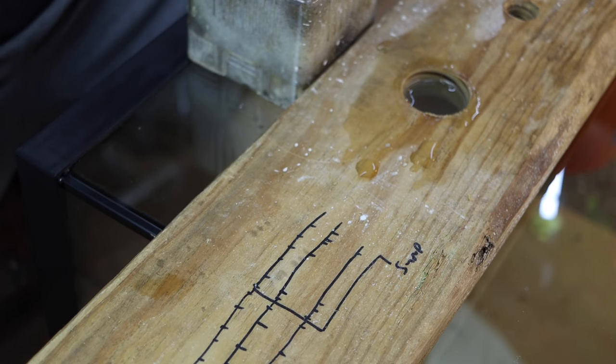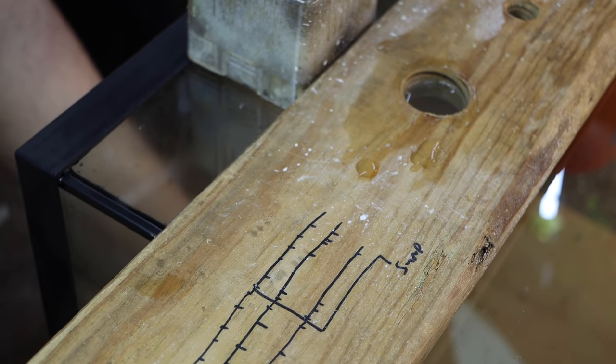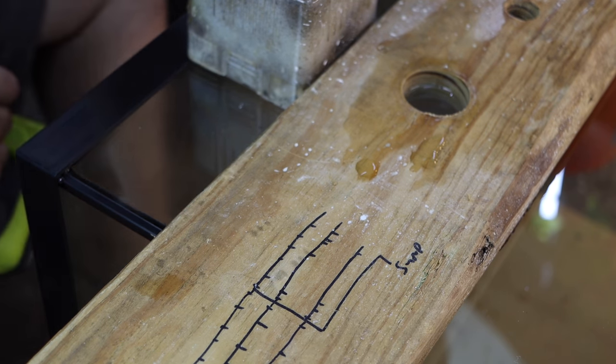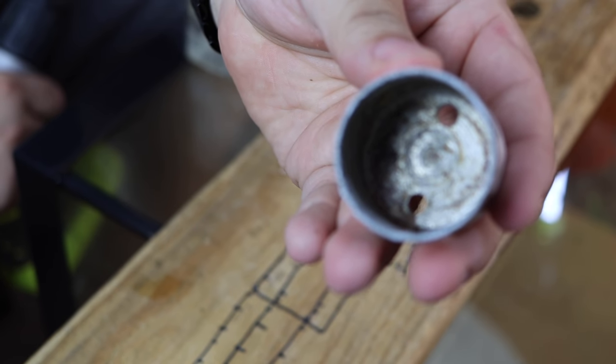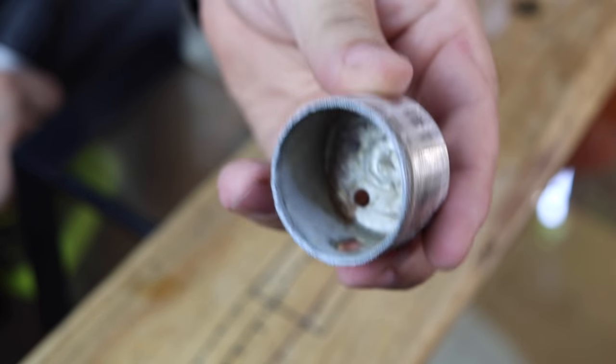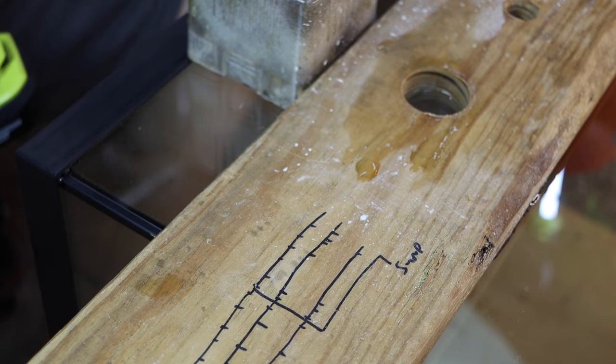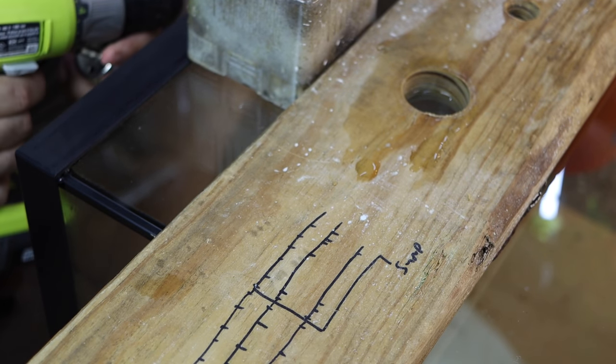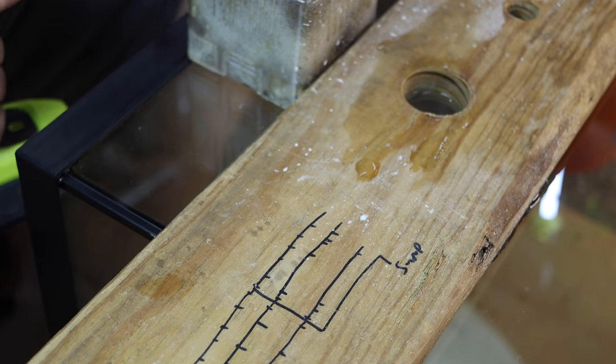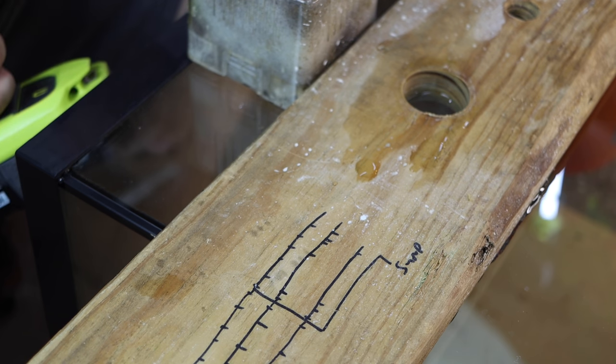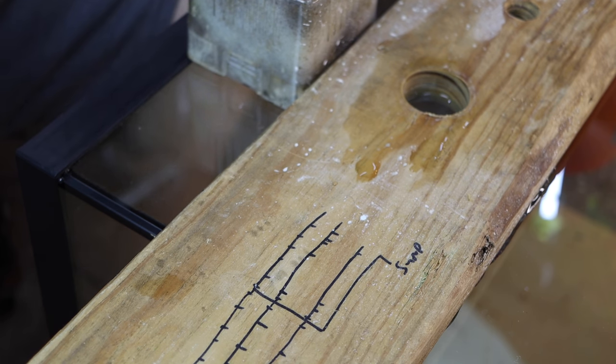Then you pour some water into the hole. That's what cools the hole saw and also will give you a smoother cut I think. I use cheap diamond hole saws that you get on Amazon, I'll put a link down below. The reason I do that is I'm only drilling a few tanks at a time.